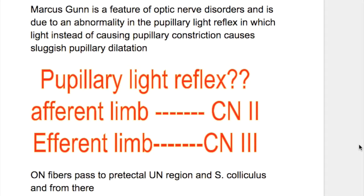In this video, we'll discuss Marcus Gunn pupil and the pupillary light reflex. Marcus Gunn pupil is a feature of optic nerve disorder and is due to an abnormality in the pupillary light reflex, in which light, instead of causing pupillary constriction, causes sluggish pupillary dilatation.